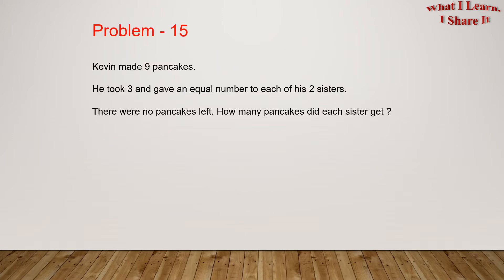Problem 15. Kevin made 9 pancakes. He took 3 and gave an equal number to each of his two sisters. There were no pancakes left. How many pancakes did each sister get?